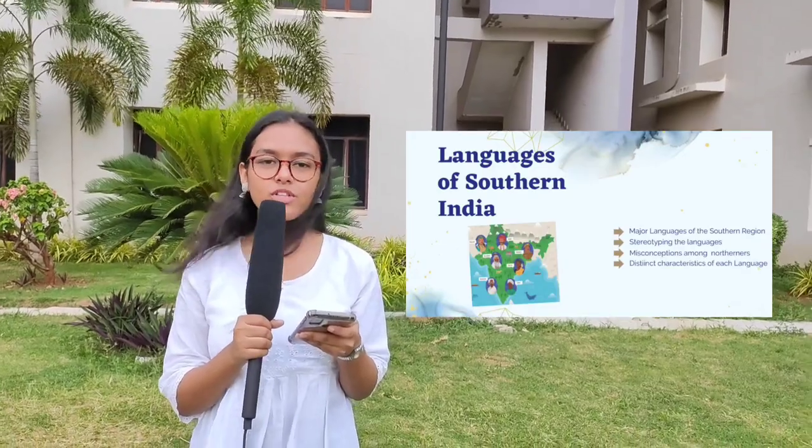In the southern region, the majority of people speak Dravidian languages — Telugu, Tamil, Kannada and Malayalam — which are among the six classical languages of India. Some states and union territories also recognize minority languages such as Dakhni Urdu spoken in Tamil Nadu and Telangana, and French in Puducherry. Besides these languages, English is also spoken in the southern region.